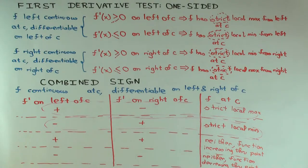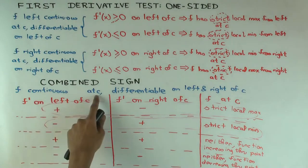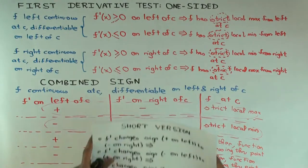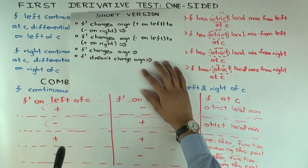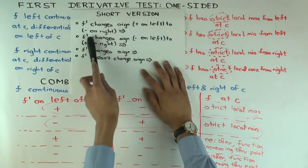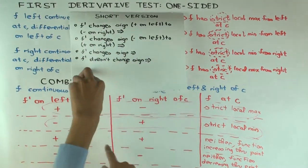I'm not going to write the assumptions again, but f is continuous at a point c and it's differentiable on the left and right of c. So the first one says, if the derivative changes sign from positive on the left to negative on the right, that means we are in the first case here.